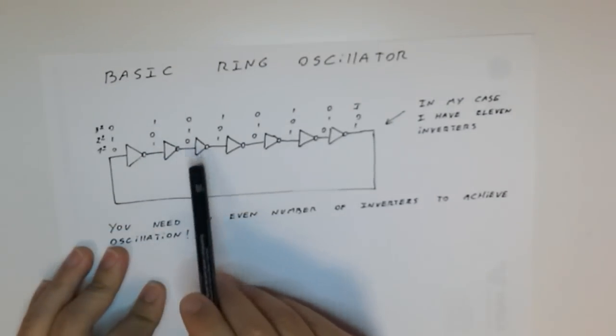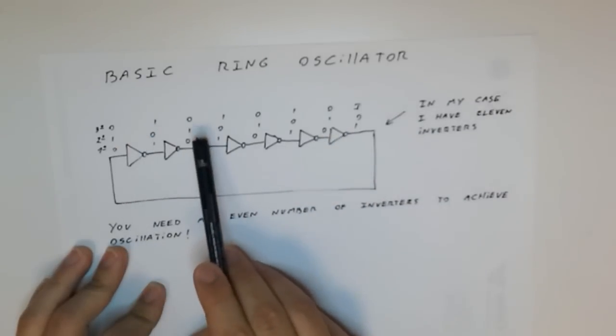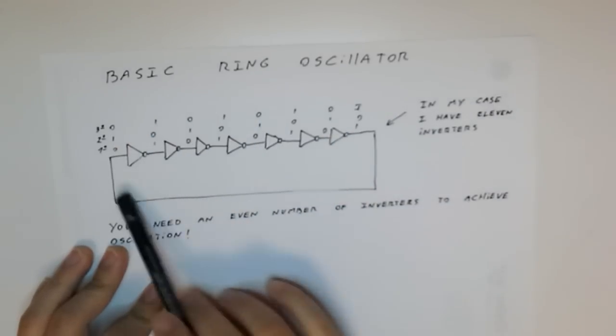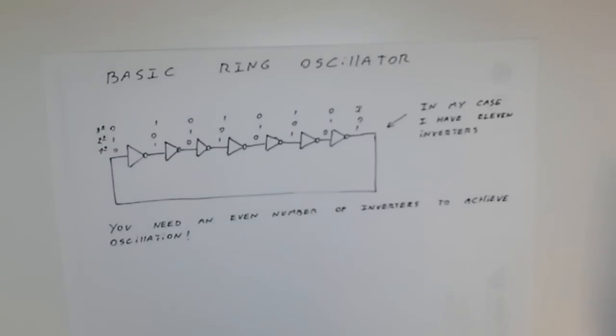If we pick as our initial condition 0 here, then we will have 1-0-1-0-1-0-1-0-1, then 1-0-1-0-1, etc. As you can see, it will oscillate forever and this is a very basic ring oscillator circuit.